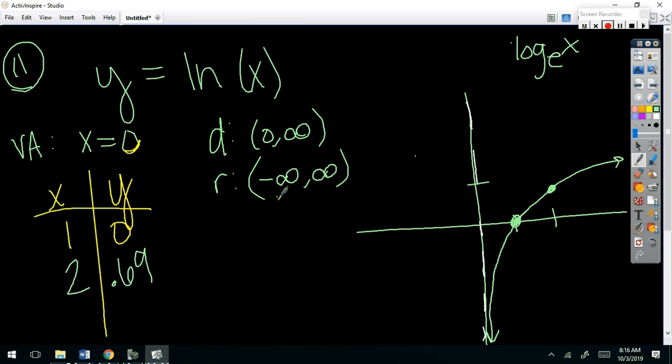I definitely saved the hardest four functions for last. So, number 12. This, you probably have not seen before. This is what we call a step function. A step function is a greatest integer function. And what it does is it says whatever is inside these brackets, you round it to the nearest integer down. So, if I had 0.2 in here, what's the closest integer below it? Integer. What's an integer? Whole number. What's the closest integer below it? Zero.